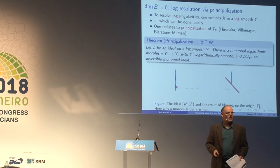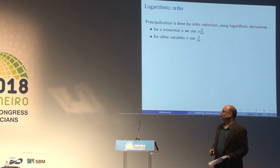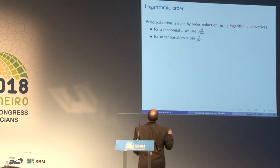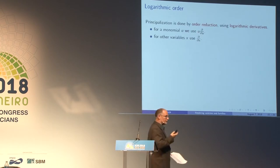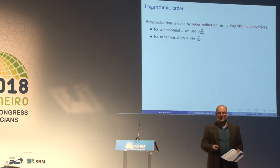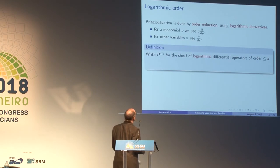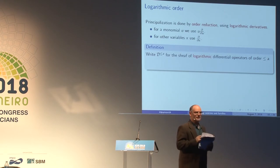How is principalization done? In the classical approach one uses order reduction, and in our case we do logarithmic order reduction. For calculating orders we use logarithmic derivatives: for a monomial we use the logarithmic derivative u · d/du, and for other variables we use the usual derivative. That spans the space of first-order logarithmic derivations and generates a ring. We write D≤a for the ring of logarithmic differential operators of order at most a — this is the logarithmic variant of the ring of differential operators.